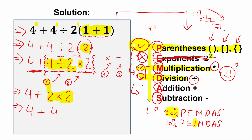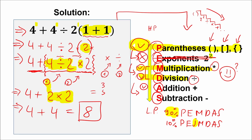The last step is addition and subtraction. We only have addition, so: 4 plus 4 equals 8. This is our answer. According to PEMDAS order of operation, 8 is 100% the correct answer to this question. PEMDAS is the most popular order of operation in the world, so you can say with confidence that 8 is correct.